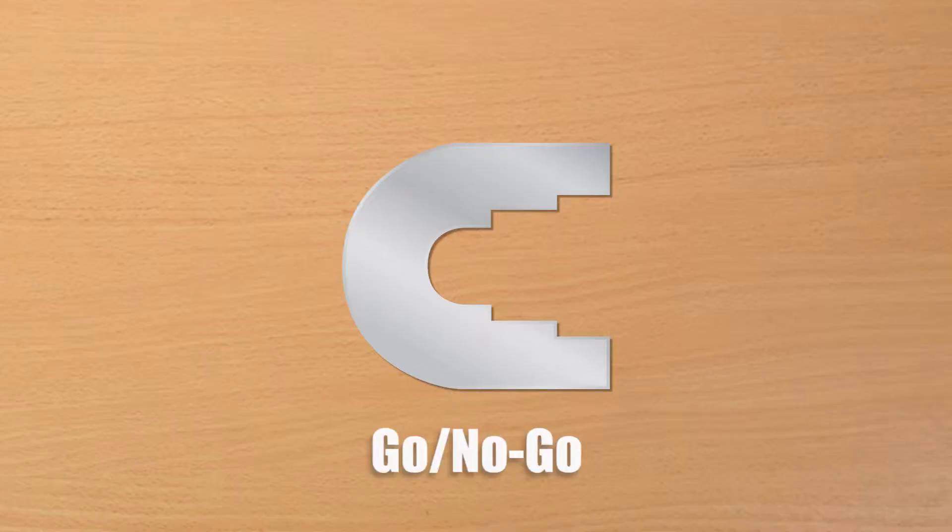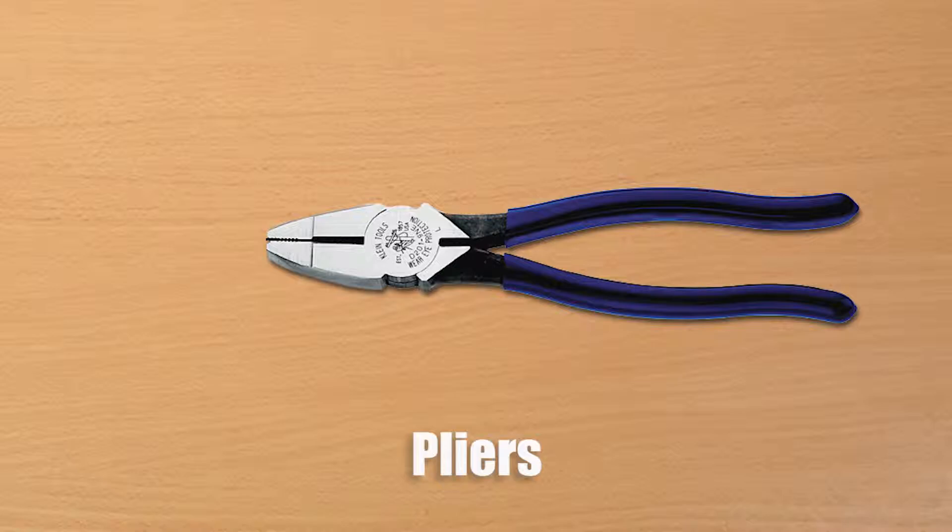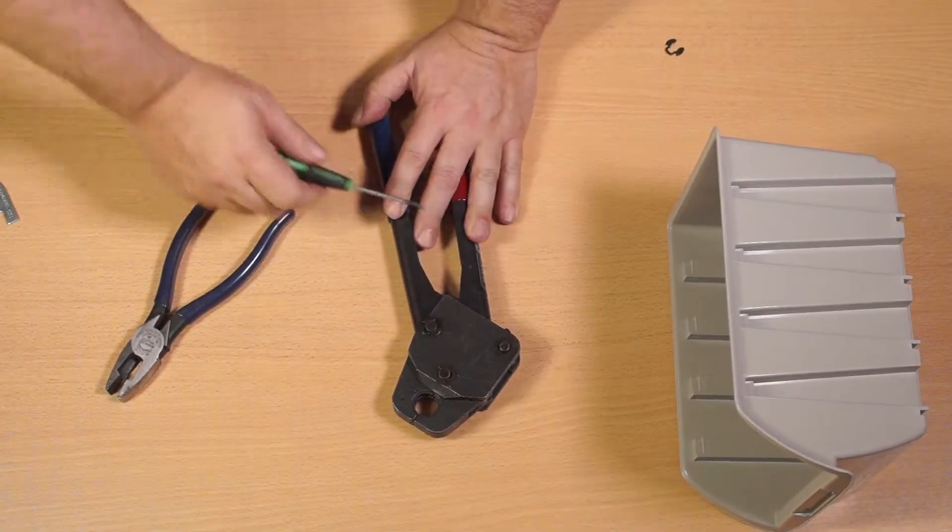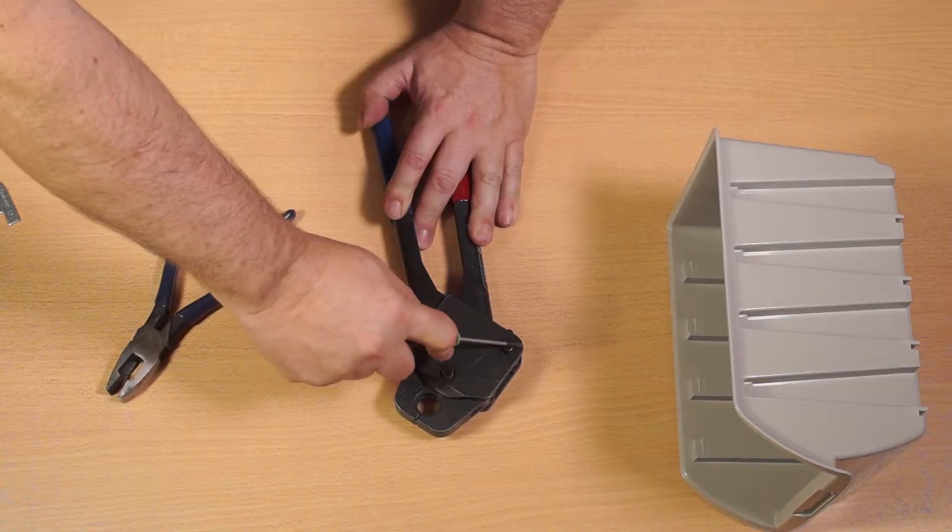You will need the go-no-go gauge, a small screwdriver, and pliers. Remove the E-clip from the adjustment pin using the small screwdriver. Use caution not to lose the E-clip when removing it.